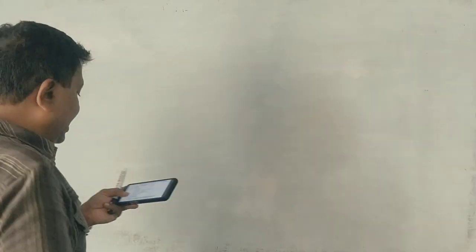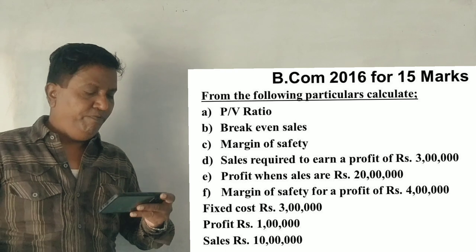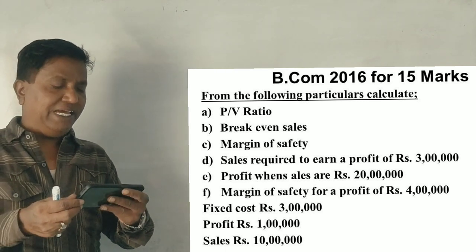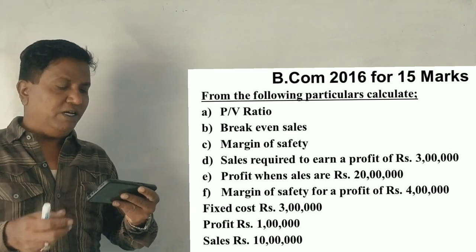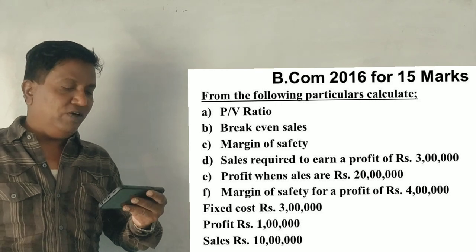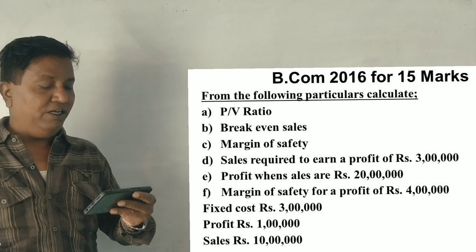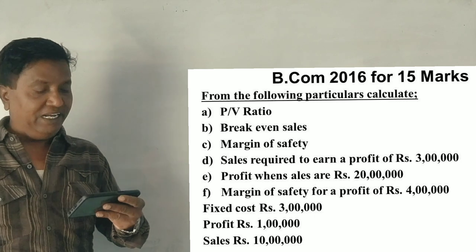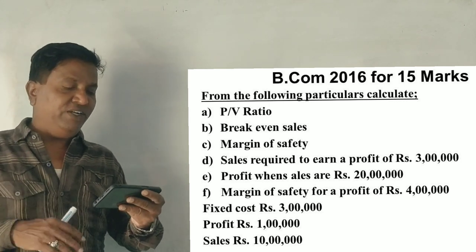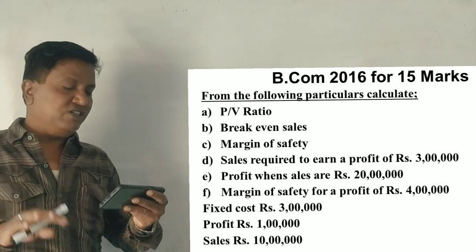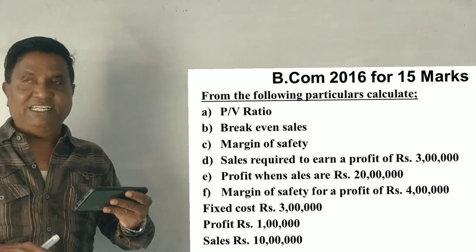Guys, 2016 early 15 marks on question 1. From the following particulars calculate P/V ratio, break-even sales, margin of safety, sales required to earn a profit of 3 lakhs, profit when sales are 20 lakhs, margin of safety at a profit of 4 lakhs. Fixed cost 3 lakhs, profit 2 lakhs, sales 10 lakhs.